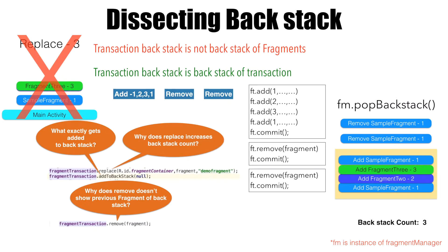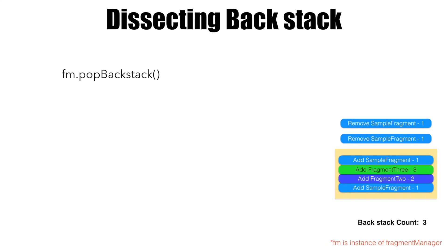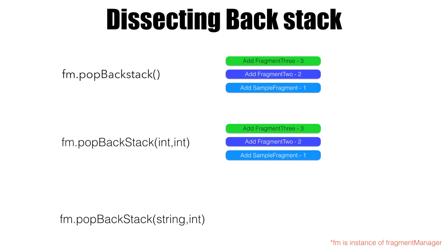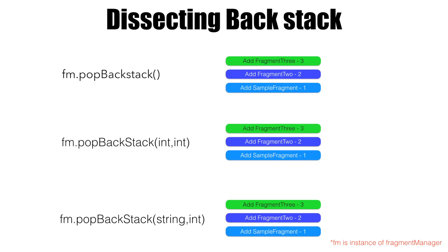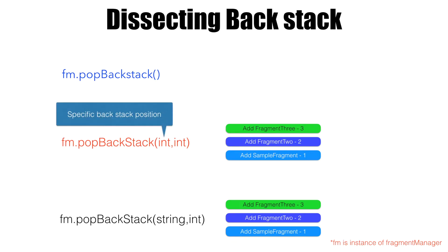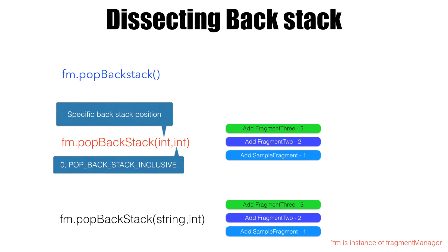Having seen the demo, let us understand the other overloaded pop backstack methods in the fragment manager. We will assume we are doing the same set of operations — adding fragment 1, 2, and 3. The simplest case we already saw: you just pop individual entries from the backstack. For fragment manager dot pop backstack with two integers as arguments, the first integer is the backstack position up to which you want to pop. The second argument takes two built-in values: integer value 0, or pop backstack inclusive, which is a constant in fragment manager with value 1.